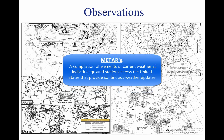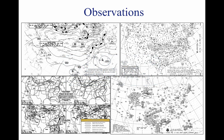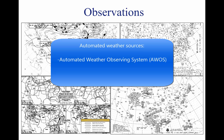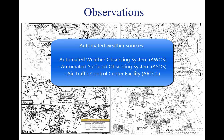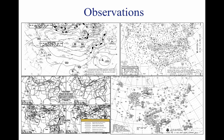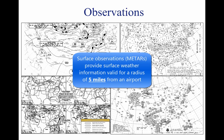Surface Aviation Weather Observations, METARs, are a compilation of elements of the current weather at individual ground stations across the United States that provide continuous, up-to-date weather information. Automated weather sources such as the Automated Weather Observing Systems (AWOS), Automated Surface Observing Systems (ASOS), and Air Route Traffic Control Center (ARTCC) facilities also play a major role in gathering surface observations. Surface observations provide local weather conditions and other relevant information for a radius of five miles of a specific airport.